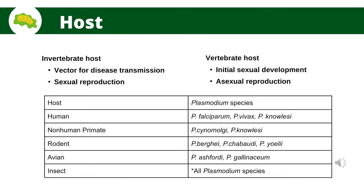The Plasmodium life cycle involves two hosts. First is an invertebrate host, the blood-feeding mosquitoes, which is the definitive host, functioning as a vector for disease transmission between vertebrate hosts and in which sexual reproduction occurs. Second is a vertebrate host, commonly regarded as the intermediate host, in which parasites reproduce asexually, begin sexual development, and cause the disease of malaria. Plasmodium vertebrate hosts include reptiles, birds, rodents, and primates.